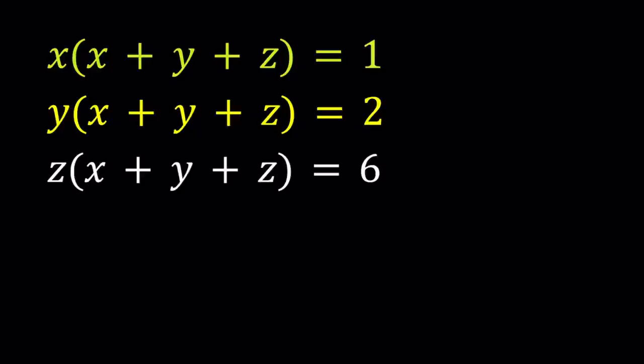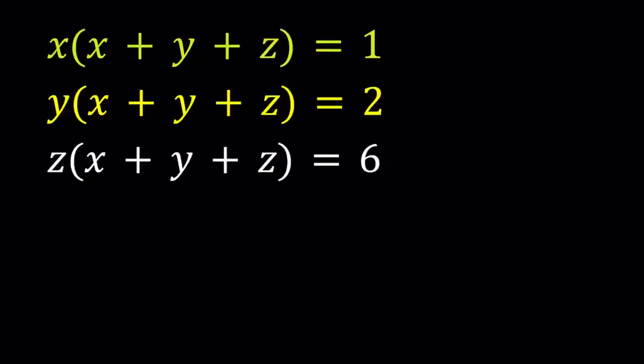So we don't really have the symmetry that we sometimes get with systems. For example, if you look at these equations, x, y, z don't play the same role because the constants are different on the right-hand side. The values of x, y, z cannot really easily be interchanged. Anyways, let's go ahead and go about solving this problem. I'm going to be presenting two methods. Let's start with the first one.